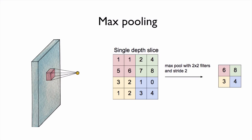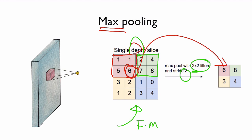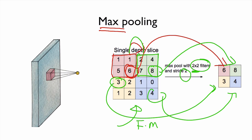We often apply pooling or subsampling layers after each convolution layer. The idea is to reduce the amount of information generated by the convolution layers. We use the same filter idea — here the filter size is 2 by 2. Max pooling is very commonly used: within each 2 by 2 patch, we select the maximum value. We move the window by stride 2 each time, selecting the maximum value in each patch, producing a reduced output.